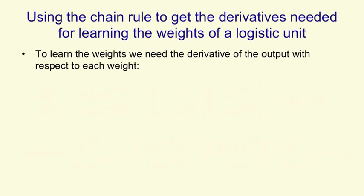Now that we've got the derivative of the output with respect to the logit, and the derivative of the logit with respect to the weight, we can start to figure out the derivative of the output with respect to the weight. We just use the chain rule again. So dy by dw is dz by dw times dy by dz.